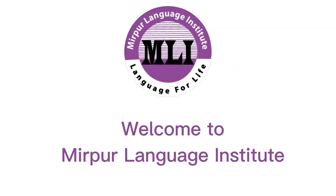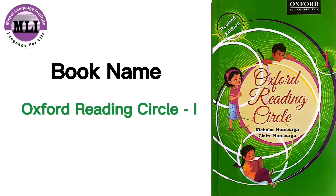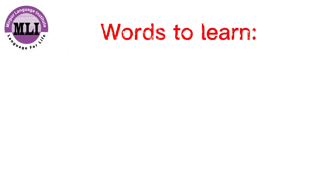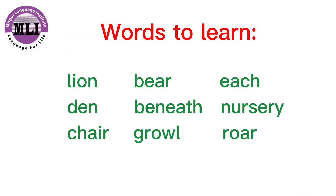Hello students, welcome to Mirpur Language Institute. Today we are learning from a book called Oxford Reading Circle. We will learn a very interesting poem called Wild Beasts. Before we recite the poem, let's learn some new words: lion, bear, eat, den, nursery, chair, growl, roar.